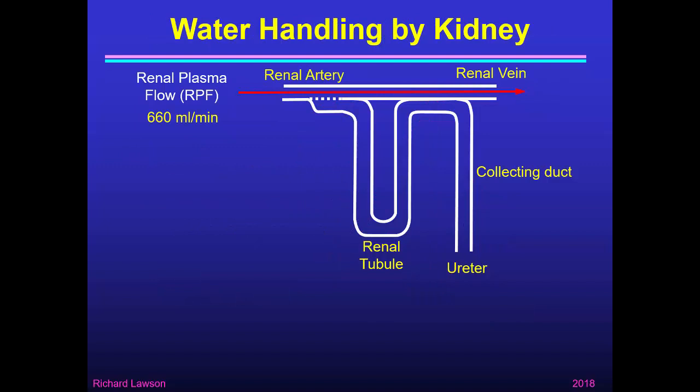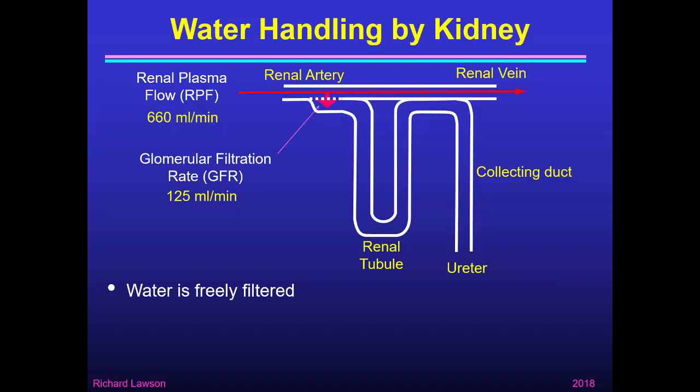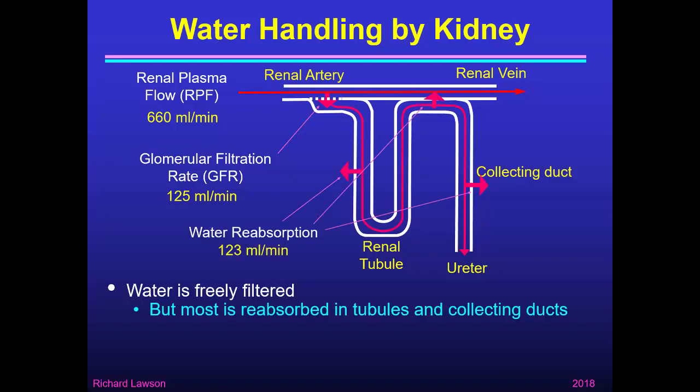Let's look at how the kidneys handle water. Water is part of plasma, so it will come into the kidney at a rate equal to the renal plasma flow, which is about 660 mls a minute, and pass through the blood and come out in the renal vein. But it's a small molecule, so it's freely filtered, and the filtration rate is normally about 125 mls a minute. That water passes into the tubules, but about 123 mls a minute is reabsorbed, leaving only about 2 mls a minute coming out in the urine during normal waking hours.